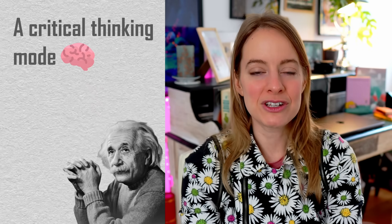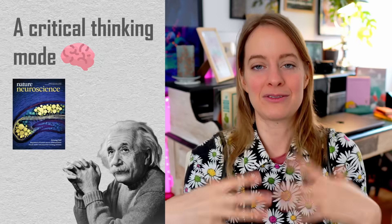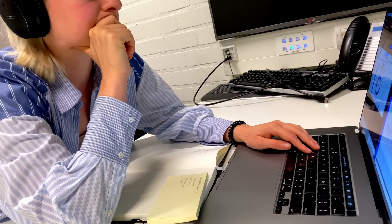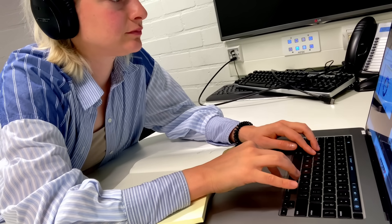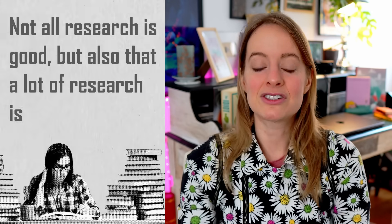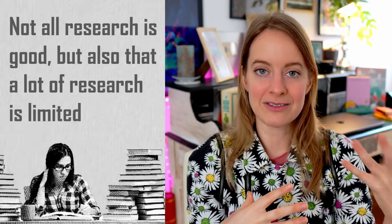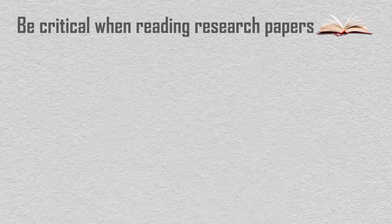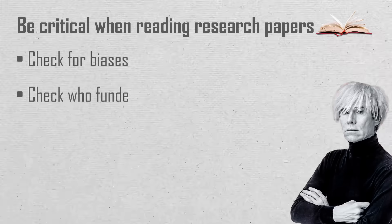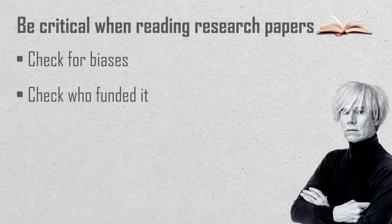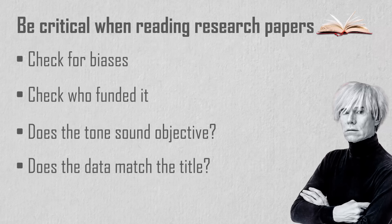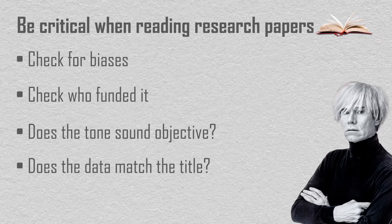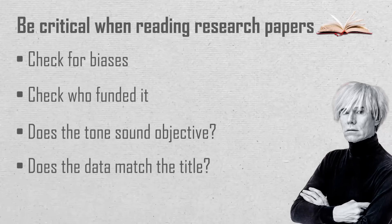Critical thinking is a little bit different from learning. Usually when you learn a new topic, you pick one book given by your professor and blindly trust the knowledge in it. But as you're doing research and finding papers, you don't want to blindly trust the resources you're selecting — not all research is good, and a lot is limited. It might be quite biased or promoting a specific idea that hasn't been fully proven. So for every paper I read, I check for biases: who funded it — is it big pharma? Does the tone sound objective? Are the arguments valid and not from a biased point of view?